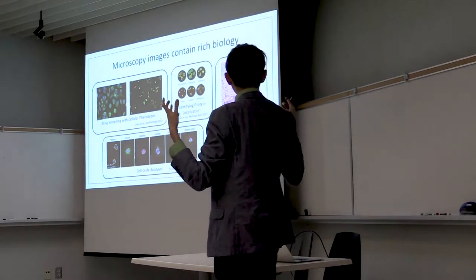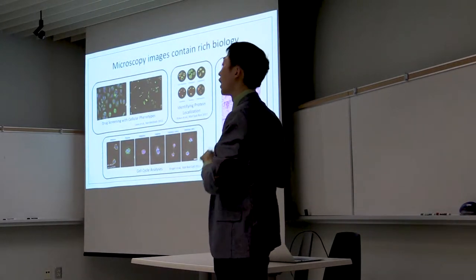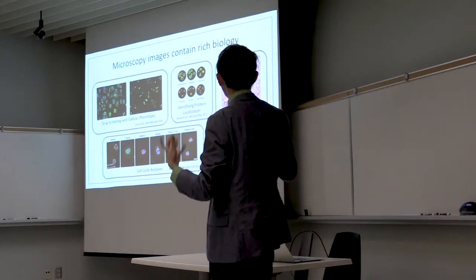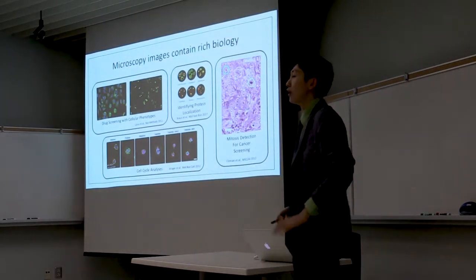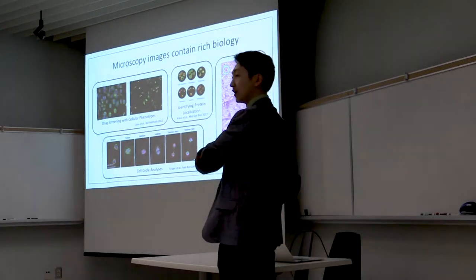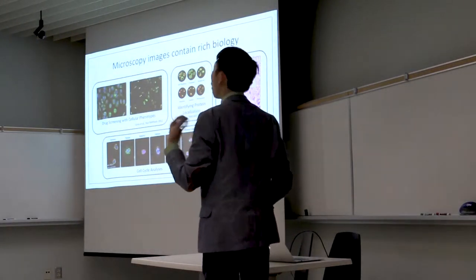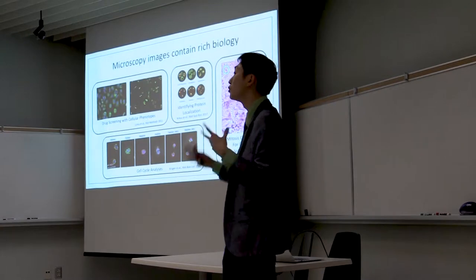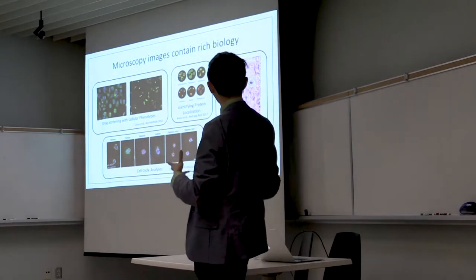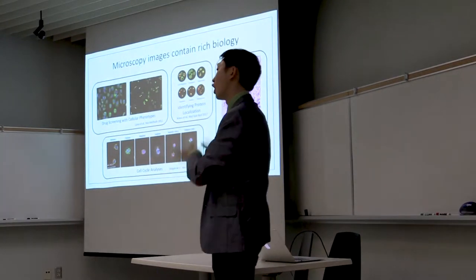For example, one of the ways that people diagnose cancer is that we look at the rate of mitosis within microscopy images. Now, these are all qualitative insights. How do we actually turn them into quantitative insights so we can measure and automate some of the biological processes that we do when we look at microscopy images?